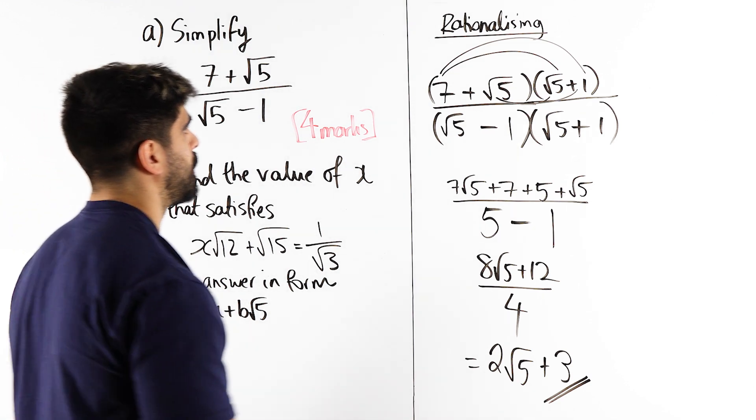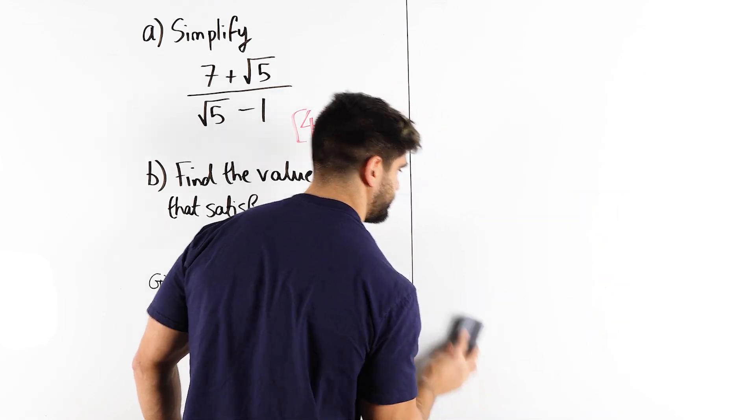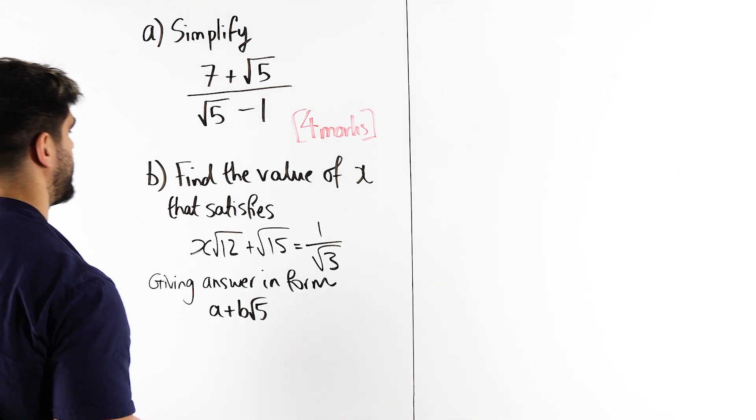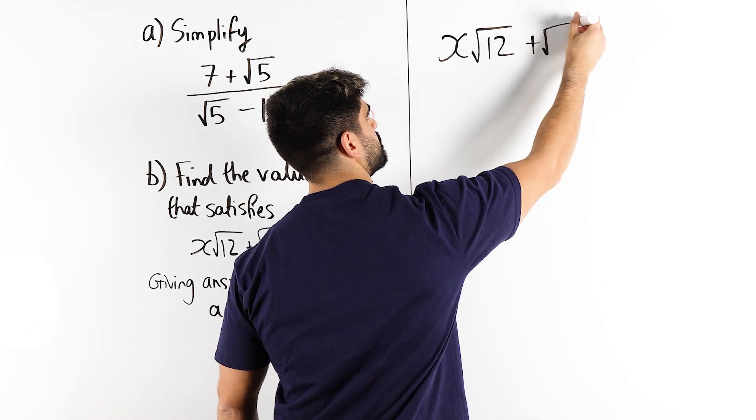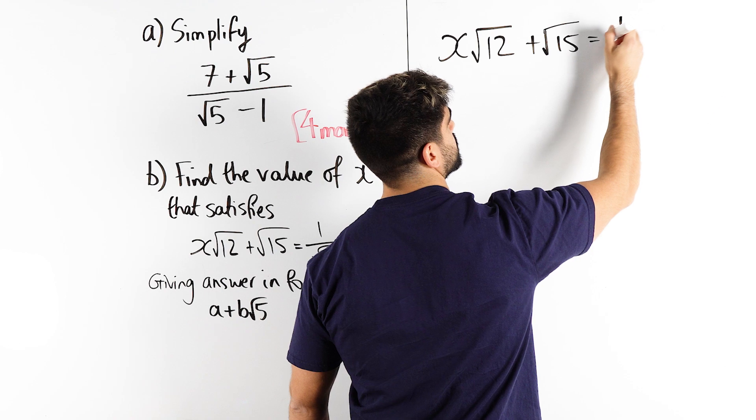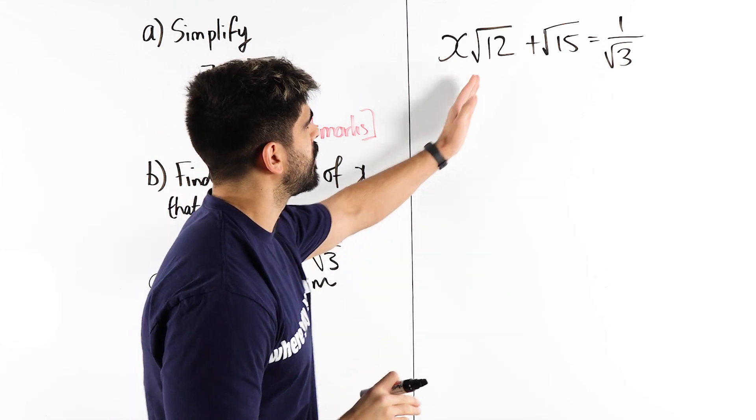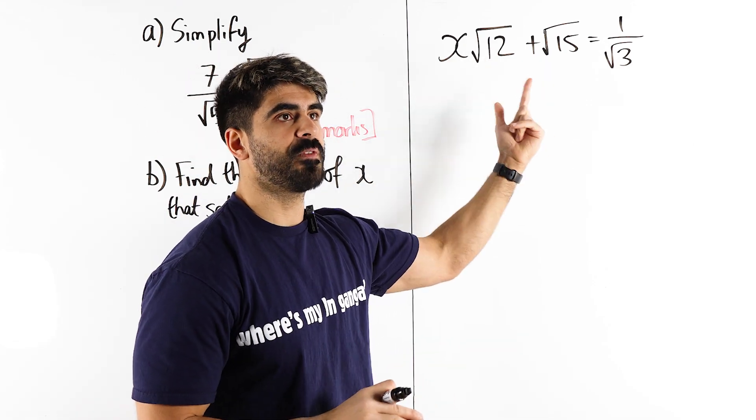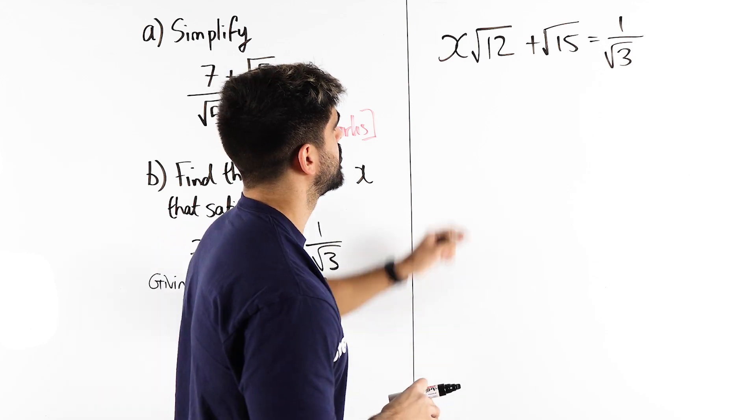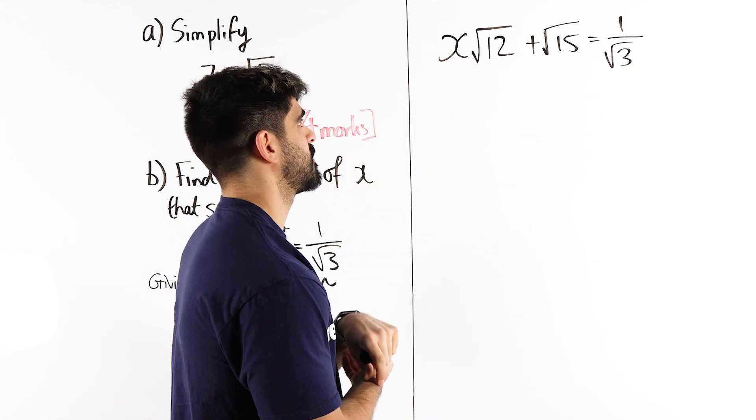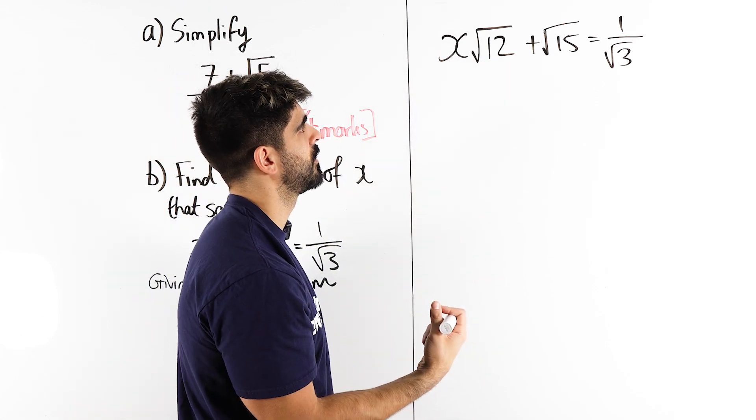So let's take a look at part B. My question that I wanted to do as well, as part of extra practice. Find the value of x that satisfies x root 12 plus root 15 is 1 over root 3. There's many ways you can do this. The first thing I notice is that root 12 can be simplified. Root 15 cannot be simplified because root 12, when we root a number, we're thinking about square numbers, right? Now, I know a square number that goes into 12, and that's 4. So I can rewrite this as root 4 times root 3, which will become 2 root 3. Now that's one way of doing it.